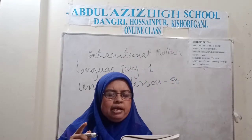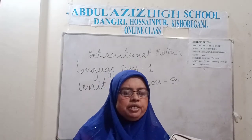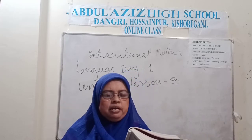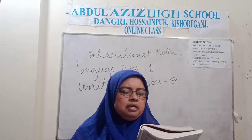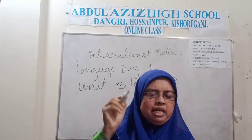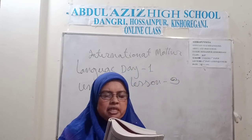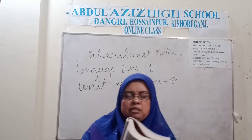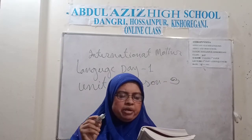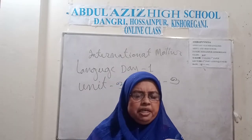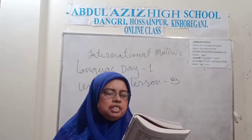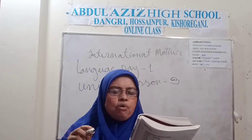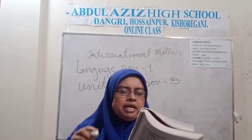The seed of the language movement was sown on 21st March 1948, when Muhammad Ali Jinnah, the then Governor General of Pakistan, at a public meeting in Dhaka, declared that Urdu would be the only state language of Pakistan. The declaration raised a storm of protest in the eastern part of the country. The protest continued nonstop, gathering momentum day by day. It turned into a movement and reached its climax in 1952.